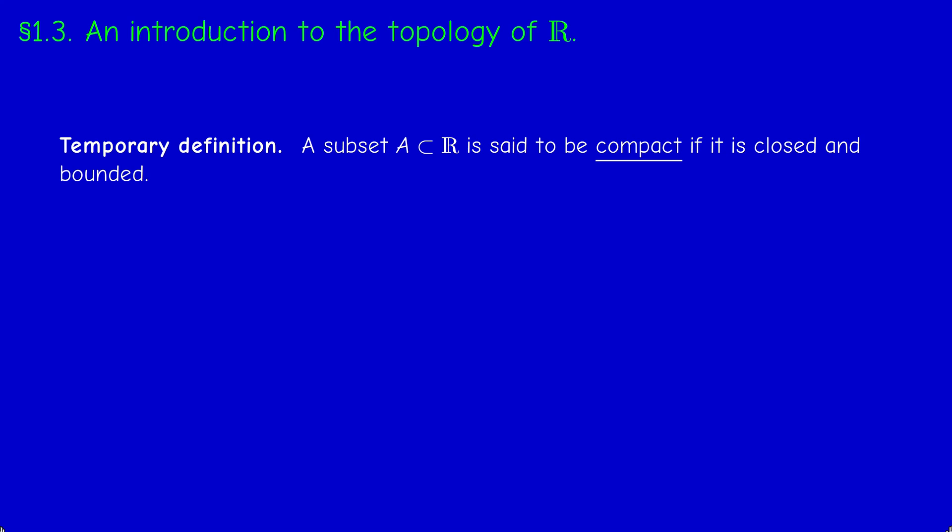Hello and welcome back. This is the last part of section 1.3 of chapter 1. In this video, we shall define and study three equivalent concepts. Let A be a subset of R. We say that A is compact if A is closed and bounded. Now this is not the real definition, it's just a temporary definition for this course.